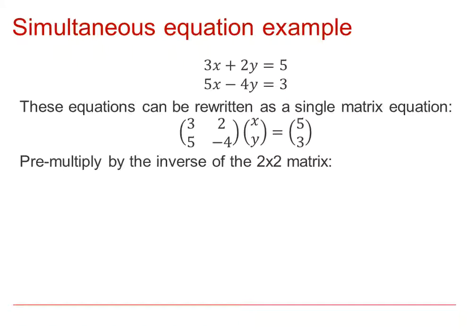Here, the two simultaneous equations have been rewritten into a single matrix equation. The coefficients 3, 2, 5, minus 4 have become the matrix M, and by multiplying that by XY it must equal 5, 3. So if we pre-multiply both sides by the inverse of M, we should be able to find XY.